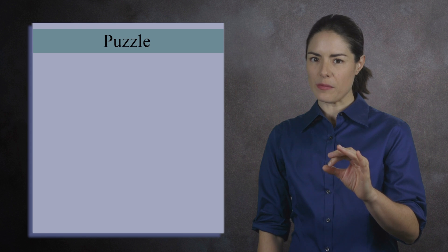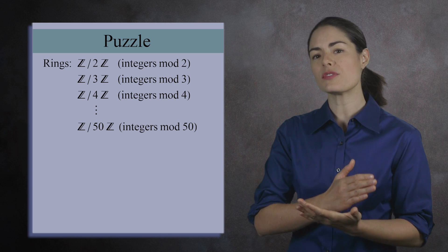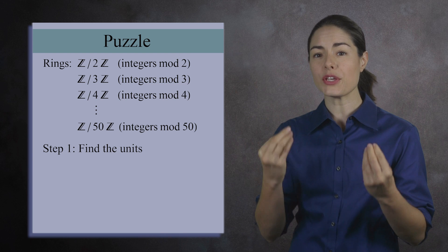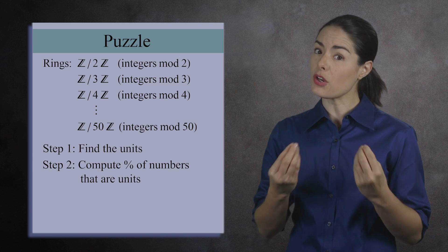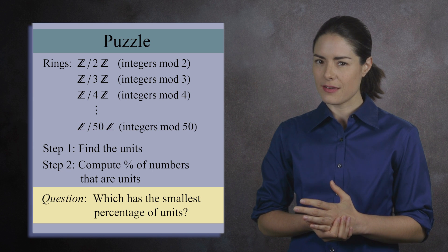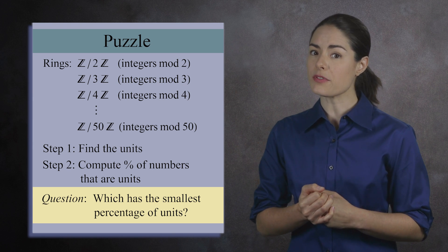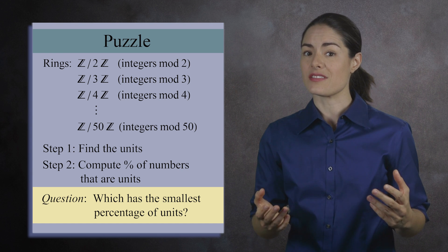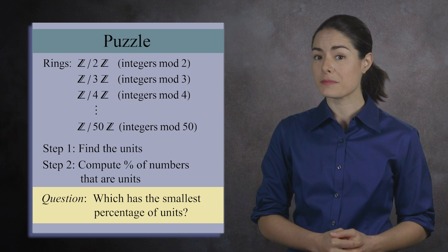Here's a fun problem for you to discuss. Look at the integers mod n from n equals 2 through 50. For each ring, find all the units and then compute the percentage of elements that are units. Which ring has the smallest percentage of units? Next, compare this to the percentage of subscribers who support us on Patreon — one of these fractions is way too small.